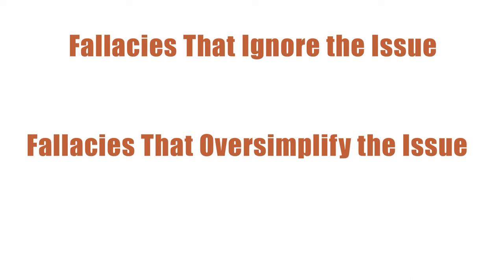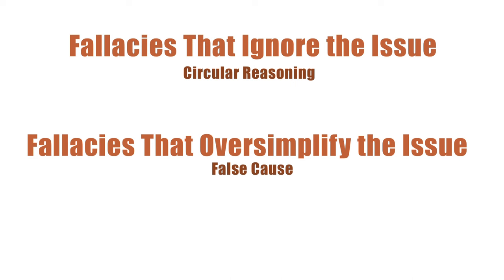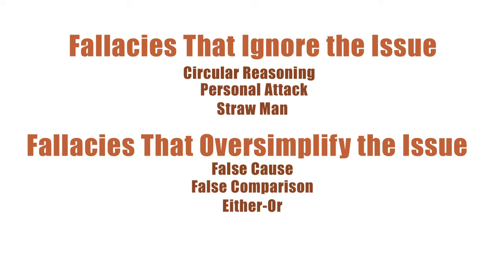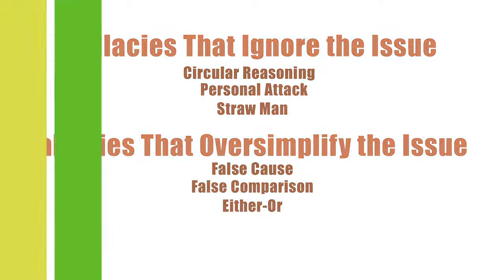Chapter 9 in the textbook will tell you more about these two fallacies. It will also explain two more common fallacies that ignore the issue — personal attack and straw man — and two more common fallacies that oversimplify the issue — false comparison and either/or. In all of these fallacies, a point is argued but no true support is offered for that point.